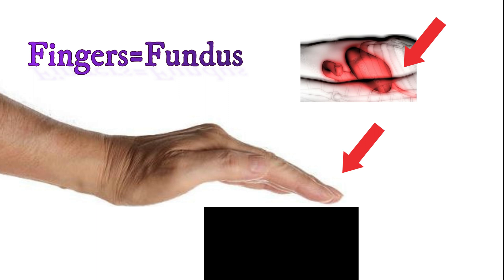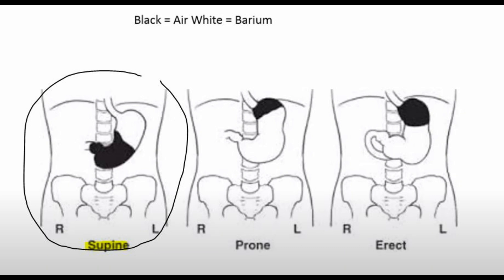The fingers represent the fundus. So a cupped hand, whatever part is touching the table is where the barium will be located. Fingers, fundus. The fingers are touching the table. And here it demonstrates on this image,